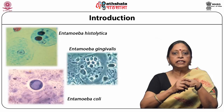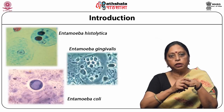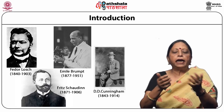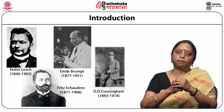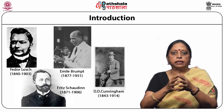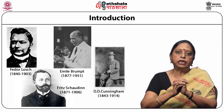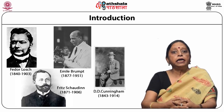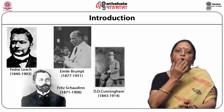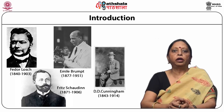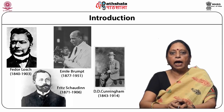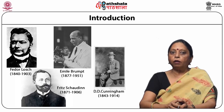Entamoeba is an acellular, anaerobic, parasitic protist found in vertebrates. Of all the different species, only Entamoeba histolytica is pathogenic to man and other vertebrates. It causes amoebiasis, amoebic dysentery, and other extra-intestinal lesions like liver abscess. Entamoeba gingivalis is a harmless commensal found in large numbers in the mouth with poor oral hygiene. Entamoeba coli is a commensal of the lumen of the colon.